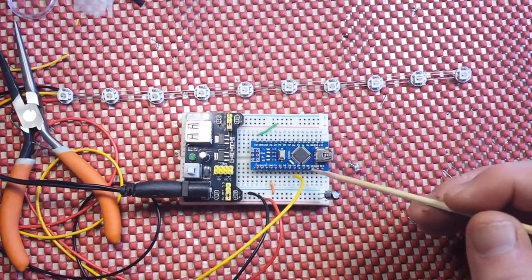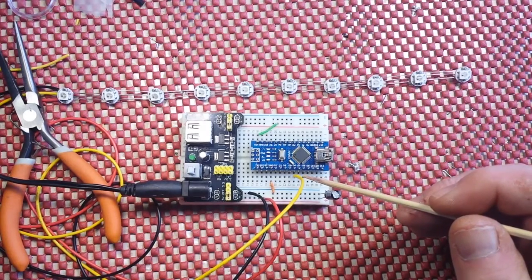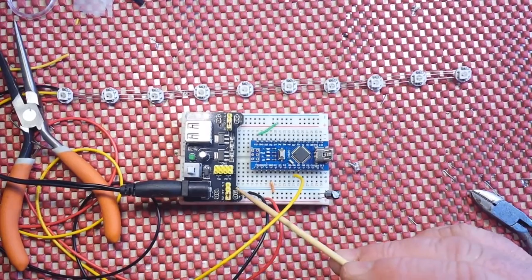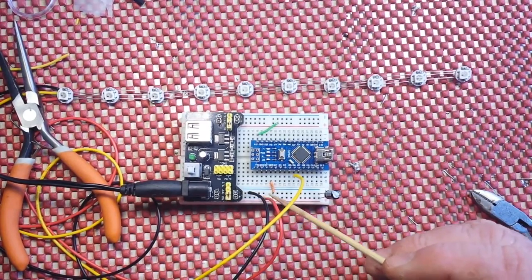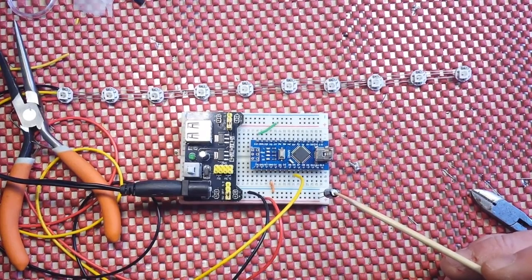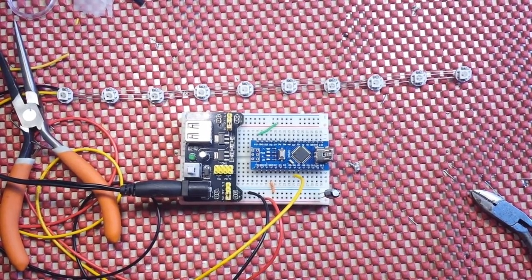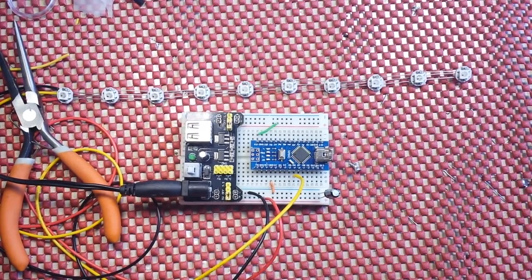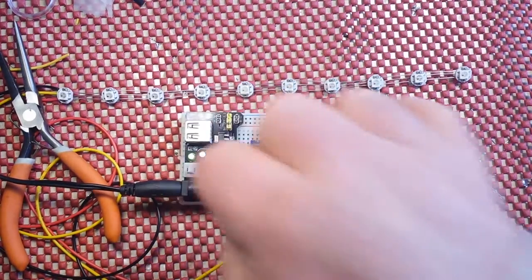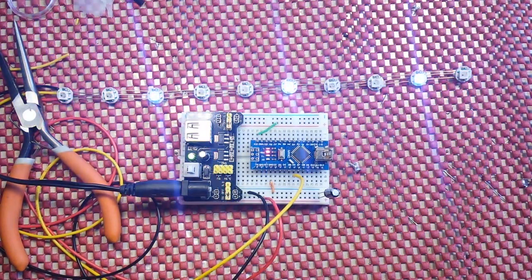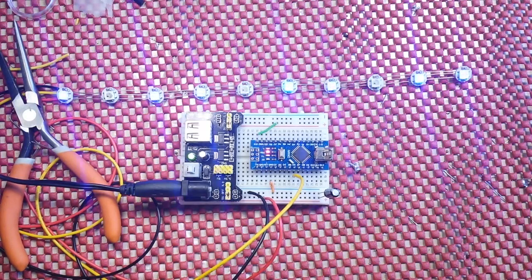We've got a Nano here. The data is hooked up to pin D6. It's using this separate power supply here, regulated 5 volt. There is a 47 microfarad capacitor on here. I know Adafruit recommends 1,000 microfarad, but I just don't have one. So, we make do with what we got. And without further ado, power up. And everything is working.